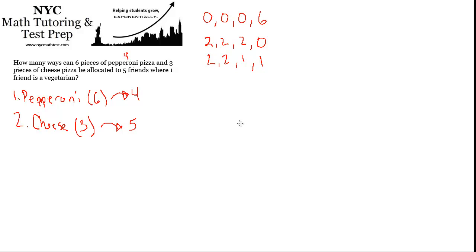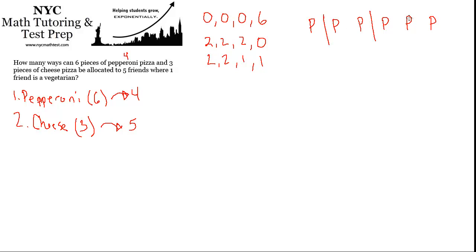We want to get a little more creative. Notice that when I listed allocations I used commas to separate out first, second, third, and fourth person. If you think about the six pieces of pizza in a row — P, P, P, P, P, P — and you're separating them into four groups, what you're basically doing is putting three separators in between them. Suppose I put a separator here, here, and here. That gives me a first group, a second group, a third group, and a fourth group.